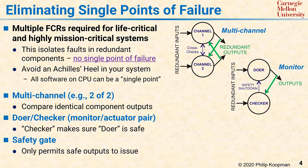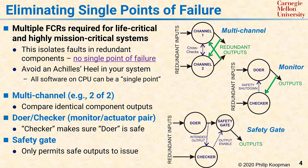The third pattern is a variant of the doer-checker pattern and is called the safety gate pattern. In this architectural pattern, a doer computes an output value and sends it to both a safety gate and a checker. The checker opens or closes the safety gate depending on whether the output looks safe. This avoids the momentary vulnerability of a plain doer-checker because unsafe outputs are never passed through the gate. However, it does come at the cost of a delay waiting for the checker to complete its check, and also the need to have a safety gate that is, in itself, not a single point of failure.